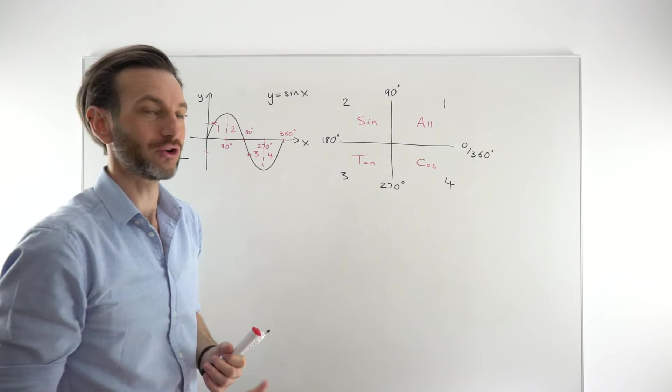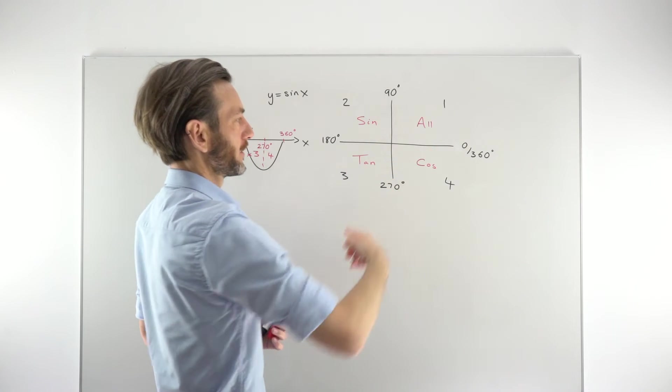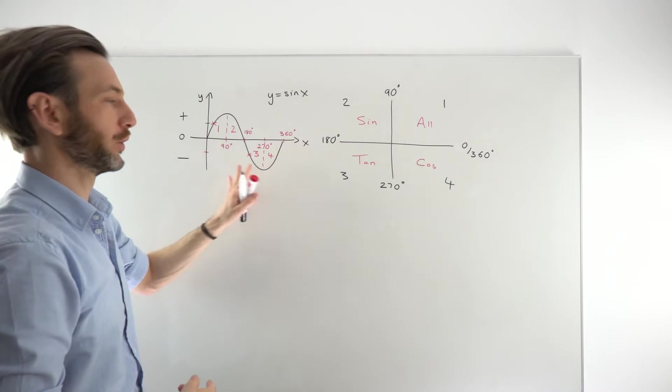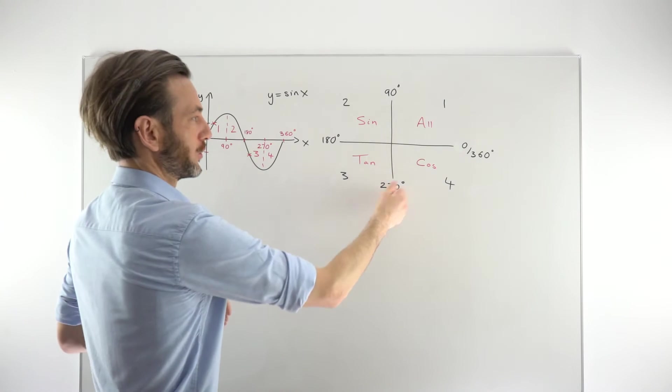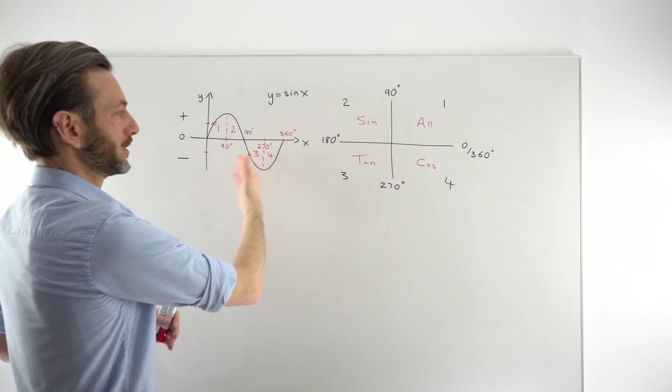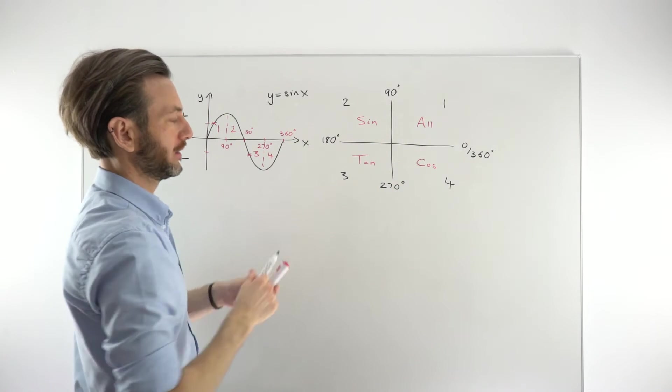Later on, when you do further trigonometry, there are things you'll do with the CAST diagram over and above what you do with the graph. So you do need to know it just as a thing in itself. But to be able to correlate it with the graph as well.